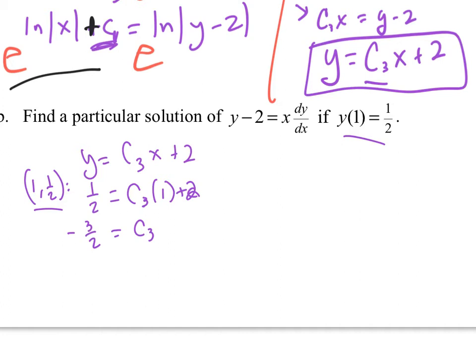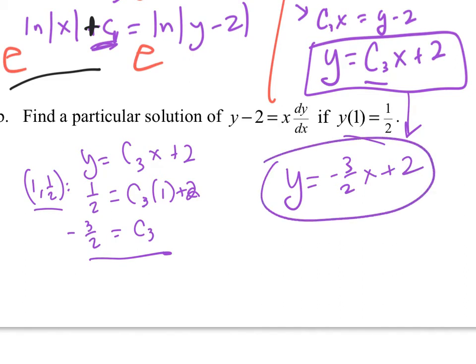And so the particular solution is not just finding c, but rewriting this with c in it. So y = -3/2 x + 2. That is my particular solution for this differential equation right here, through this point.